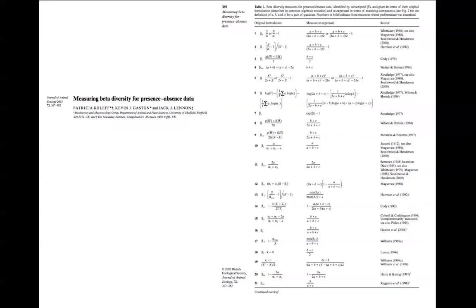Just to reiterate: don't confuse diversity indices — Simpson's, Shannon, and the Gini coefficient — with indices for measuring differences in composition between sites.